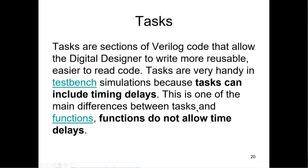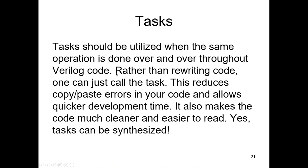Tasks and functions are sections of Verilog code that allow you to write more reusable, easier-to-read code. They're very handy in test benches because tasks can include timing delays. The two big differences: functions can be embedded in expressions, but tasks can't — they have to appear on a single line like a module instantiation. Tasks can have multiple outputs, whereas functions can only have a single output (but it can be a vector). Both can have any number of inputs, but tasks can include delays and functions can't.